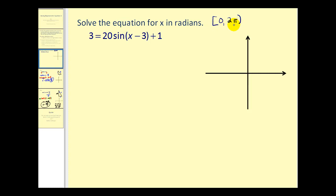On this first problem we want to solve this equation for x on the interval from 0 to 2π, including 0 and not including 2π. Well, our first step is going to be to isolate the sine function. Let's go ahead and subtract 1 on both sides.